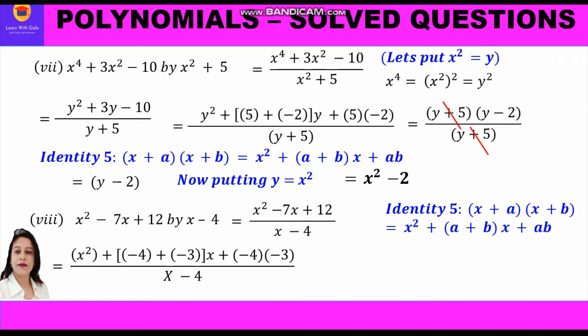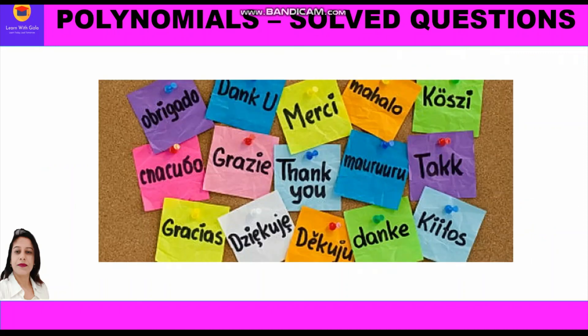We substitute in the identity and write in the numerator: x² + (−4 + −3)x + (−4 × −3) upon (x−4). The two factors are (x−4)(x−3) upon (x−4). Now (x−4) cancels, and we are left with the answer x minus 3. I hope you have understood these types of questions on division of polynomials by a binomial using the factor method. Thank you everyone.